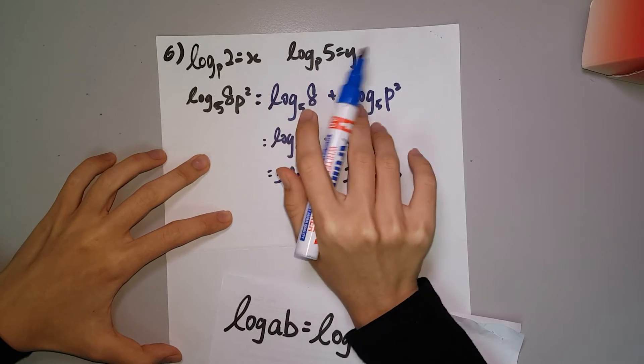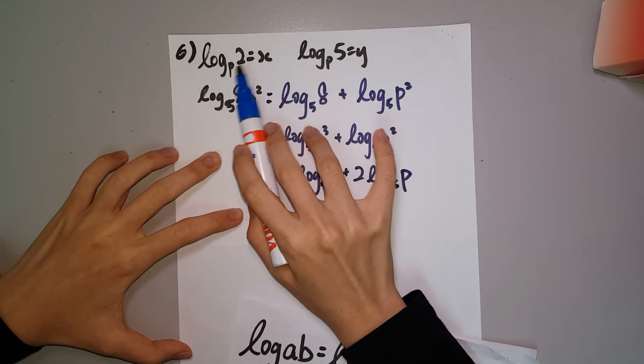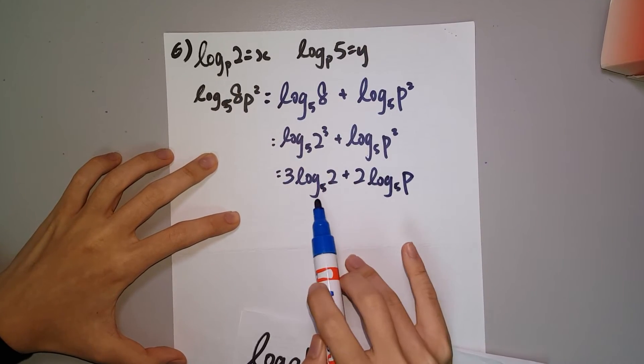Now refer back to the equation x equals log P2, and y equals log P5. Both the bases are P, so we have to change the base.